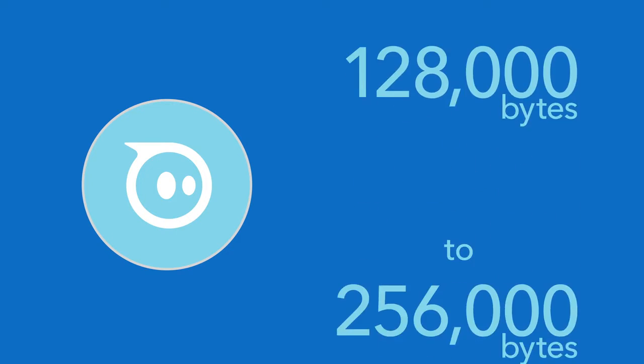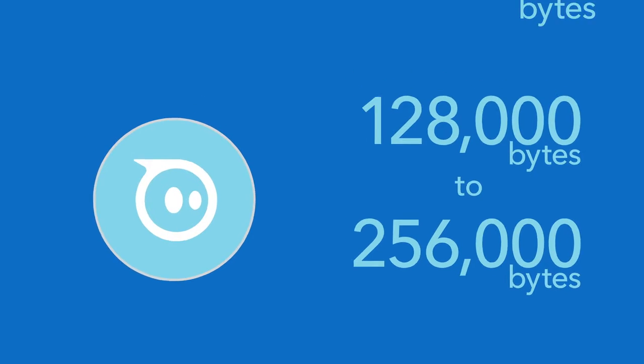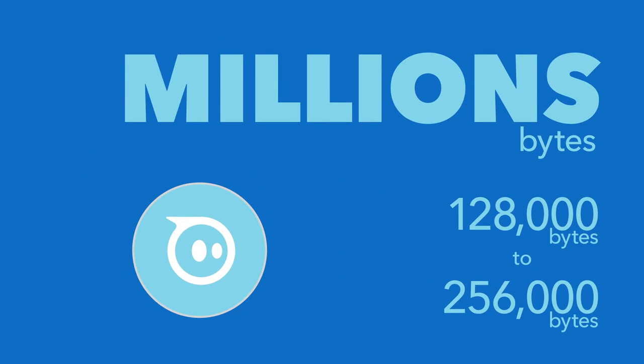Binary is an understanding of the most basic part of computer programming — simple ones and zeros. Sphero robots only have 128,000 to 256,000 bytes, which is tiny compared to your mobile phone or computer, which has millions of bytes. So it's really important to define things at the lowest level with the least amount of memory.